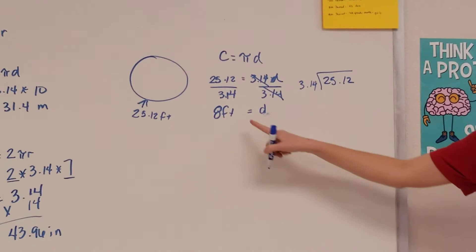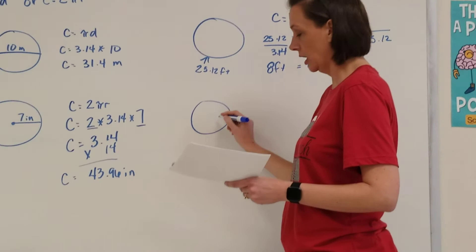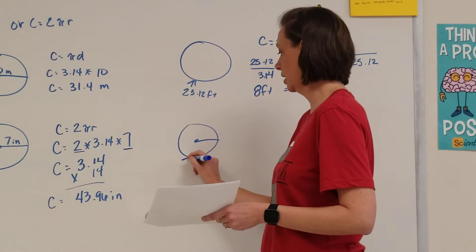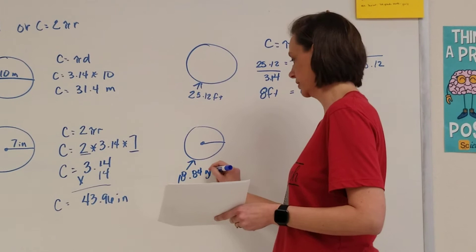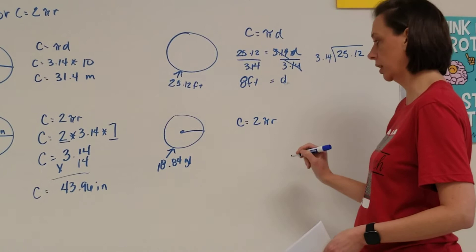Now let's say you're given the circumference, but you're only given a radius this time. They're trying to find the radius. So I'm given a circumference of 18.84 yards. So I'm going to find the radius. So if circumference is 2 pi r, plug in what we know. Circumference is 18.84.